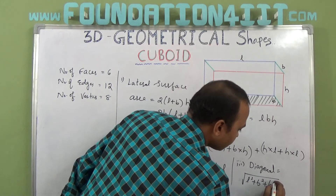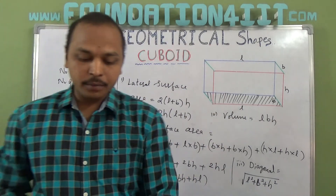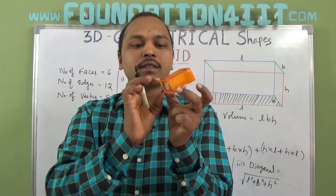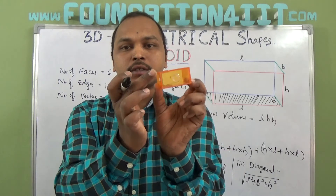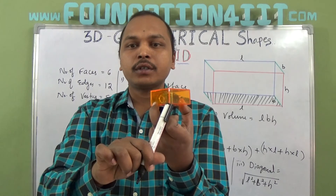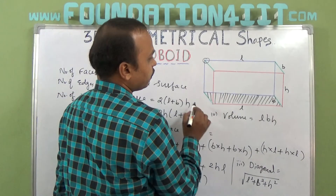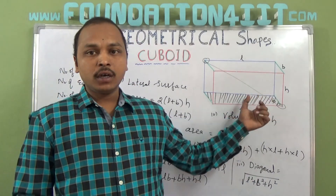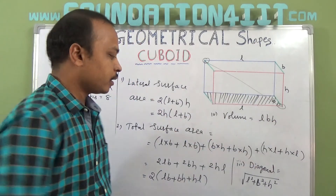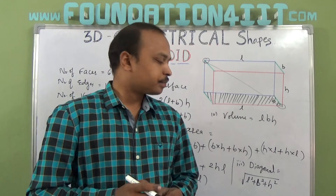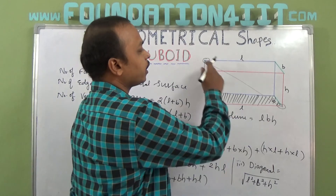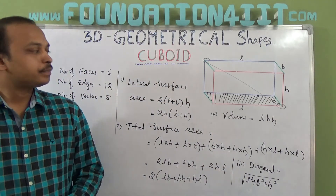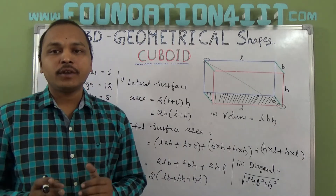The diagonal of a cuboid is the square root of l² + b² + h². The diagonal is the longest pole or stick that can be placed inside the cuboid, going from one corner to the opposite corner. The root of l² + b² gives the diagonal of the rectangular base, and adding h² extends it to the full space diagonal.